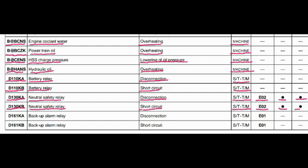Code D161KA: the part is the backup alarm relay and the problem is disconnection. The controller involved is the steering and transmission controller. Action code E01. No lamp blinking and no beeping.